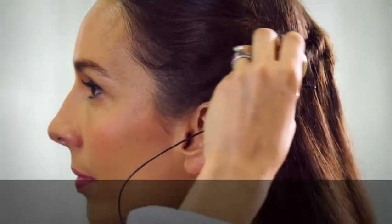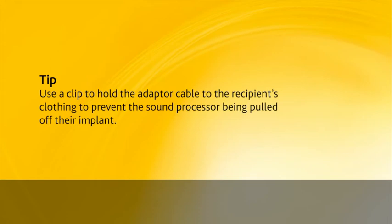Put the Kanso on your recipient. Use a clip to hold the adapter cable to the recipient's clothing to prevent the sound processor being pulled off their implant. Start the Cochlear Fitting software and program your recipient's Kanso.